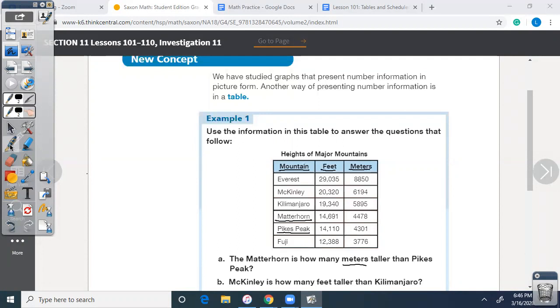The Matterhorn is how many meters taller than Pikes Peak. So we're going to go with Matterhorn meters, which is 4,478. How many meters taller, which means we're subtracting Pikes Peak, which is 4,301. Do you understand how to find that information in the table?